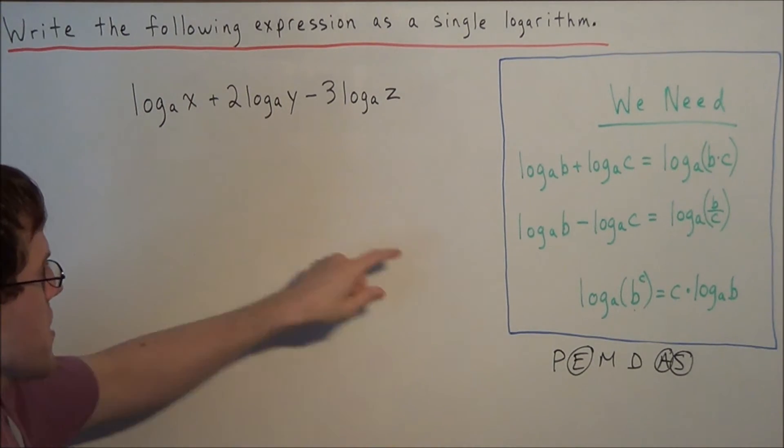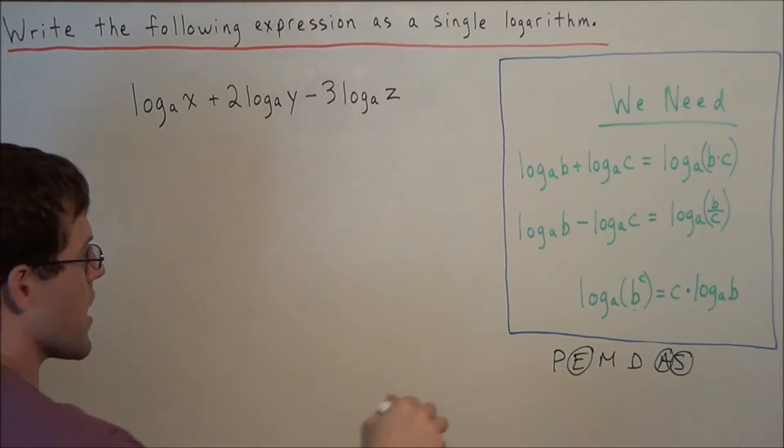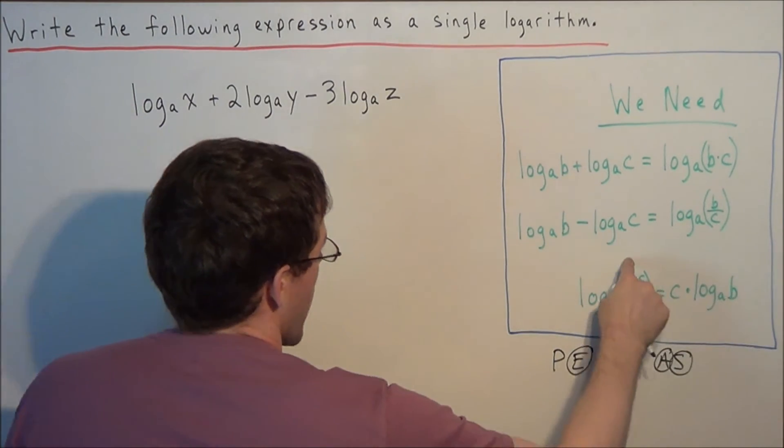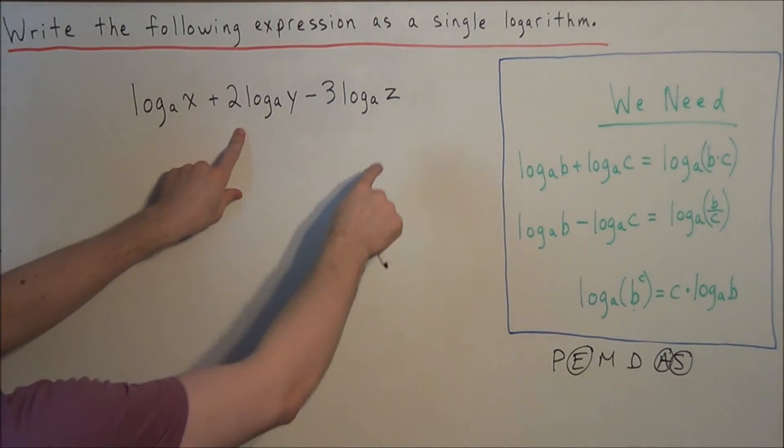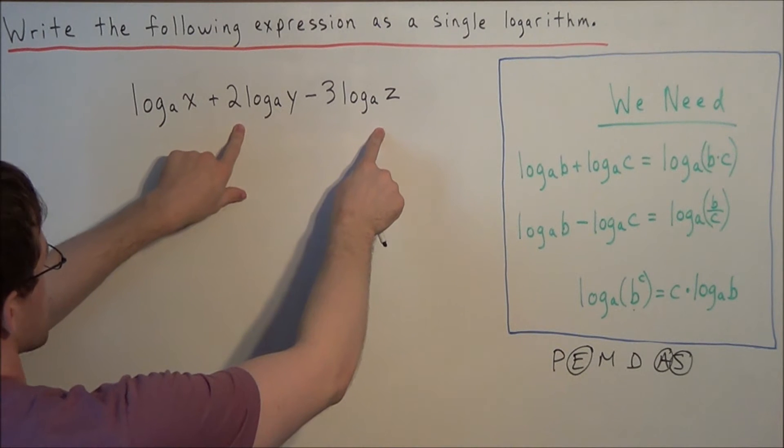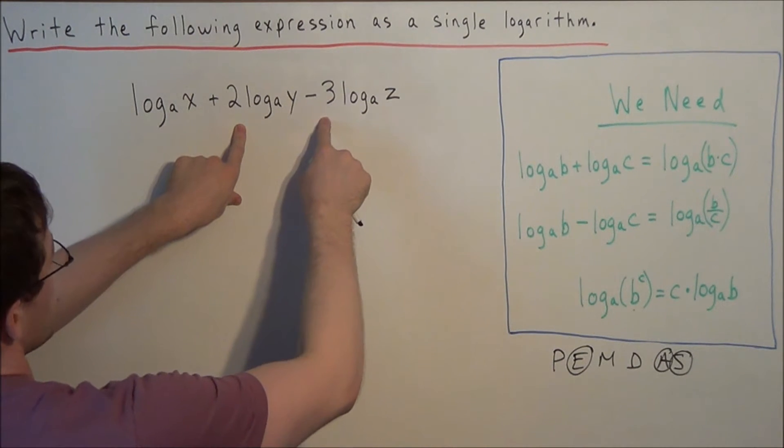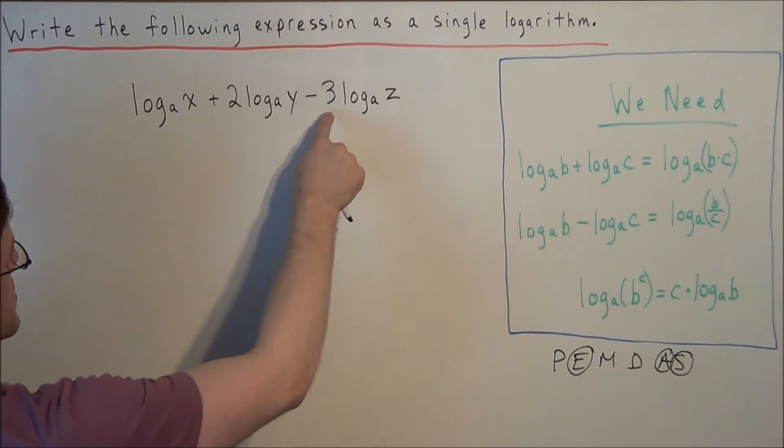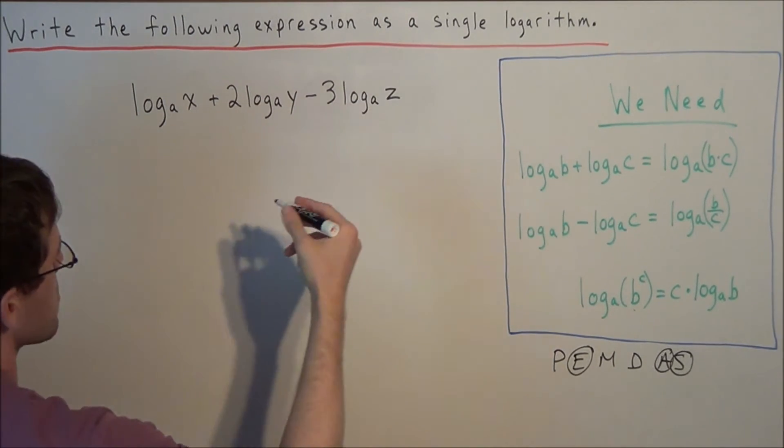So now we use the exponent property. Remember, when we have a number written outside of our log, we could send it back into the log as an exponent. So for these two pieces here, we have a 2 outside of this log and we have a 3 outside of this log. So for the next line, we could send this 2 back in as an exponent of y. We could send this 3 back in as an exponent of z.